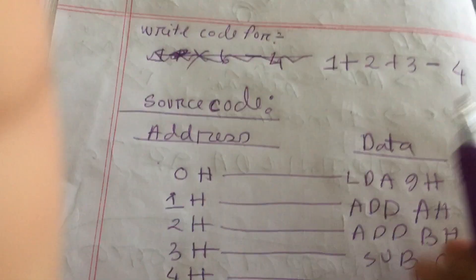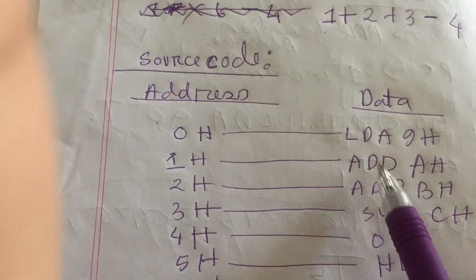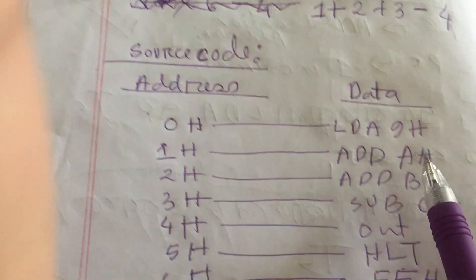After that, we have loaded 2 in AH, and we have to add it. So we are writing the instruction that add will happen with AH.